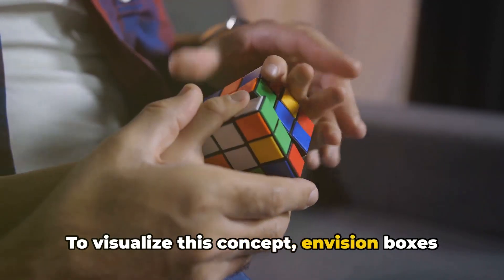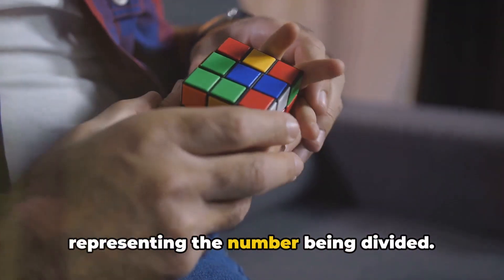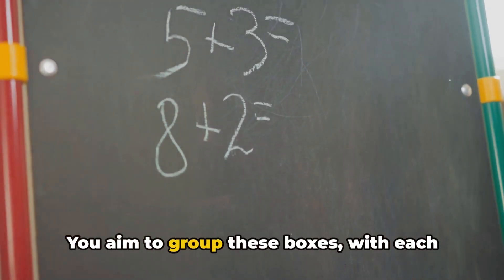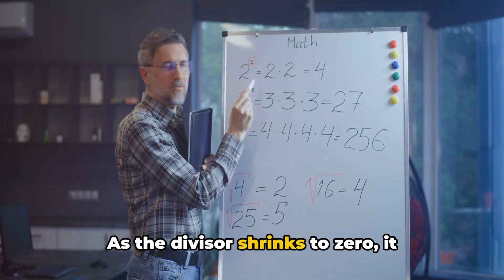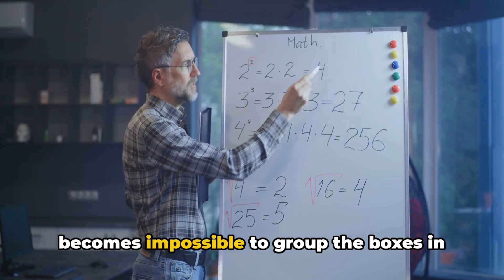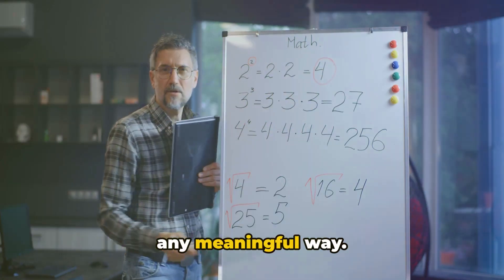To visualize this concept, envision boxes representing the number being divided. You aim to group these boxes with each group represented by the divisor. As the divisor shrinks to zero, it becomes impossible to group the boxes in any meaningful way.